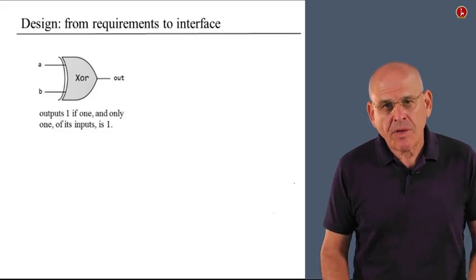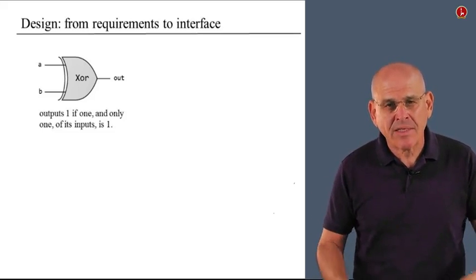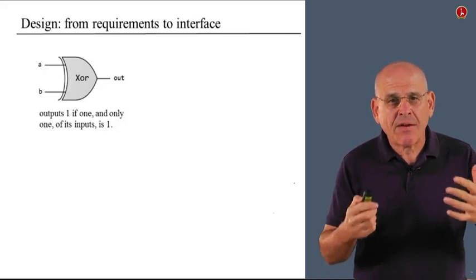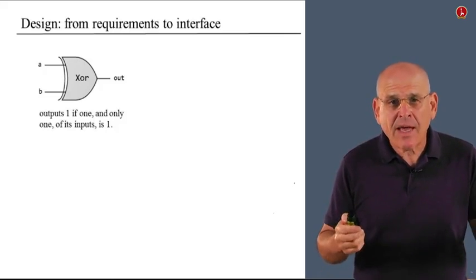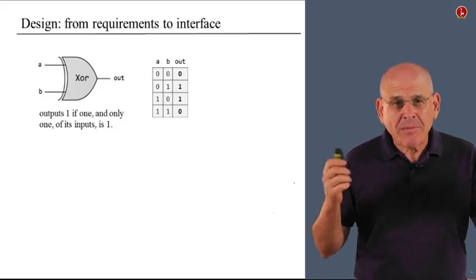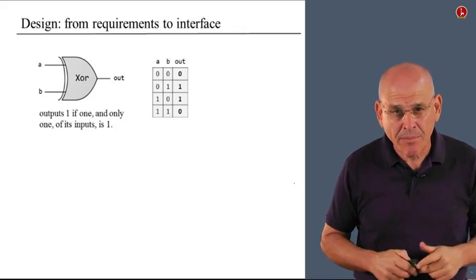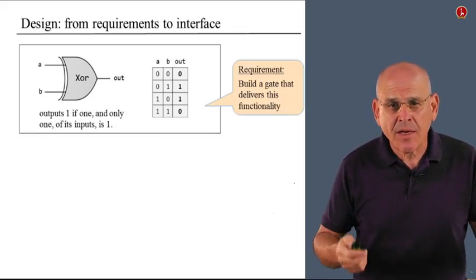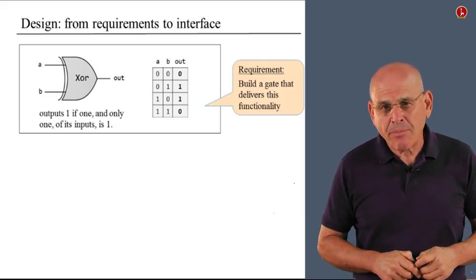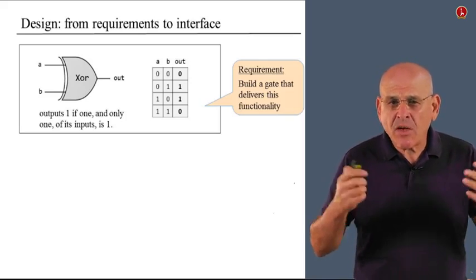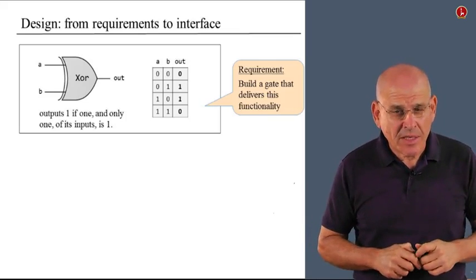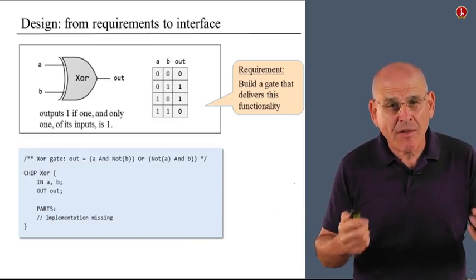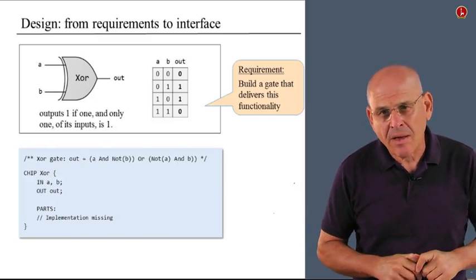The first thing that you have to do as a gate architect is demand a full and complete description of the desired gate's behavior. In this case, what we need is some sort of a truth table. In the case of XOR, it's a very simple truth table. The truth table, along with the gate diagram, gives you everything that you need to understand what this chip is supposed to do. What we see here is also sometimes called the chip's interface. Using this information, you can start writing an HDL file.